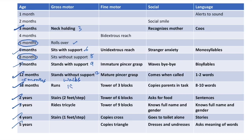Gross motor continued: after walking at 15 months, the child runs, then climbs stairs two feet per step, then rides a tricycle, then climbs stairs one foot per step. Fine motor starts at 4 months, then unilateral reach at 6 months, then immature pincer grasp, mature pincer grasp, tower of 3 blocks, tower of 6 blocks, tower of 9 blocks, copies cross, and copies triangle.